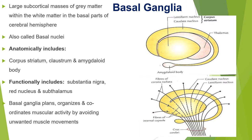Basal ganglia consists of anatomical parts and functional parts. Anatomically, it includes corpus striatum, claustrum and amygdaloid body. Functionally, it includes substantia nigra, red nucleus, both of which are parts of the midbrain, and subthalamus. In brief, the basal ganglia functions to plan, organize and coordinate muscular activity by avoiding unwanted muscle movements.